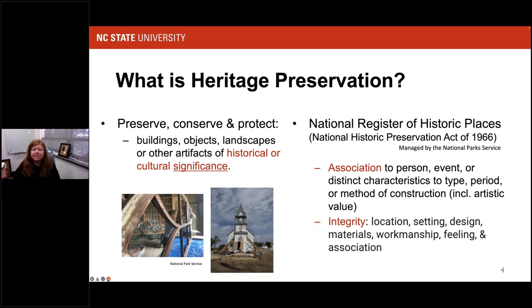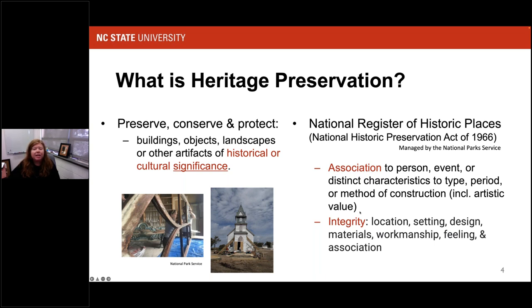To have something be considered significant, it needs to have association to a person, event, or distinct characteristics to type, period, or method of construction, including artistic value. In terms of integrity, there's something about the location in which something is set, the setting around that location, the design of whatever is under consideration, the materials, the feeling that the object or building or place evokes, and its association to those persons, events, distinct characteristic types, period, or method of construction.